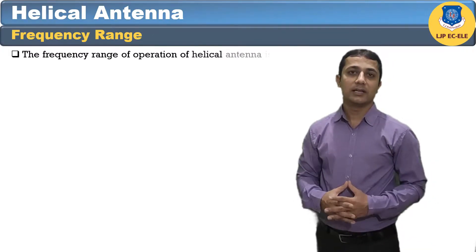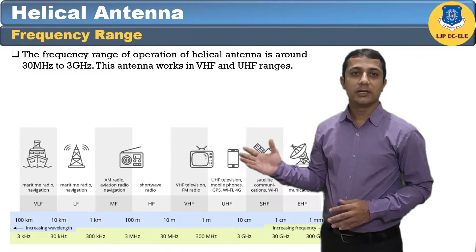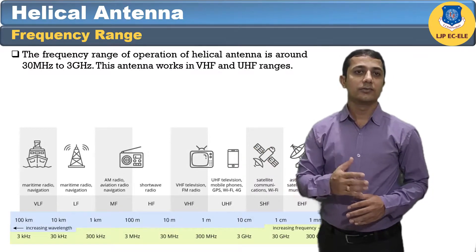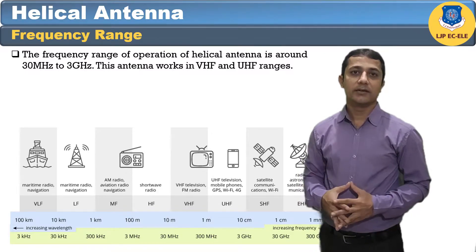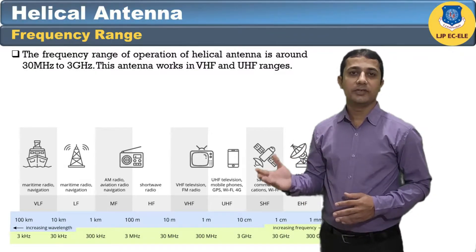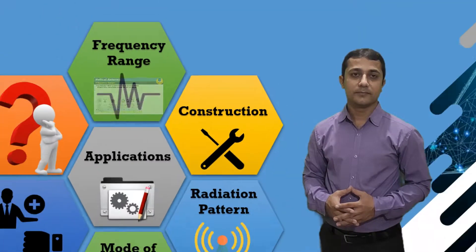The frequency range of operation of the helical antenna is around 30 MHz to 3 GHz. This antenna works in the VHF and UHF range.